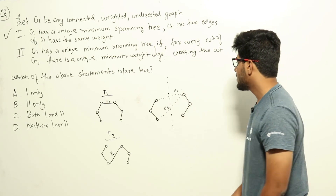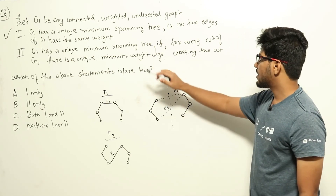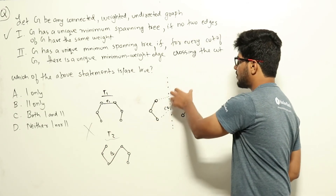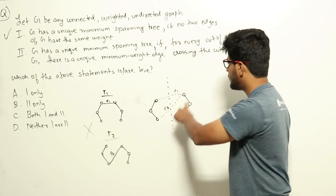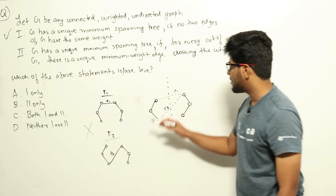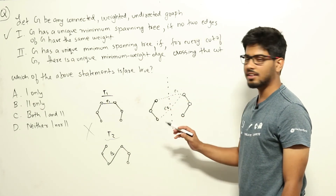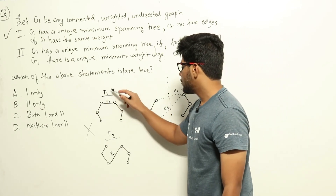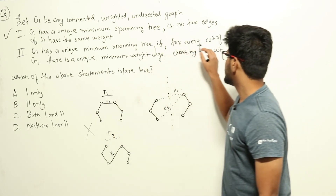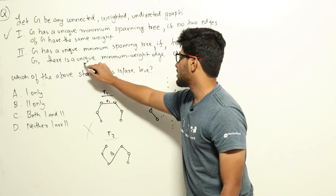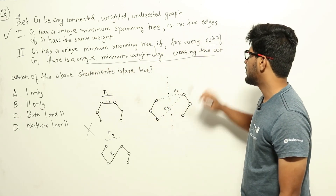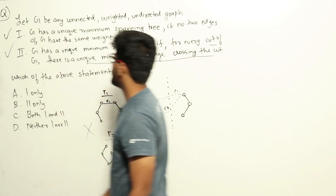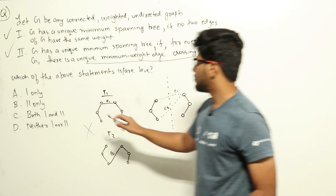This contradiction shows the assumption was false. For every cut, the unique minimum weight edge must be added to the minimum spanning tree. Adding any other edge would yield a spanning tree with greater total weight, so there cannot be two distinct minimum spanning trees if this condition holds. Therefore, statement 2 is also true. Looking at the options, both statement 1 and statement 2 are true.